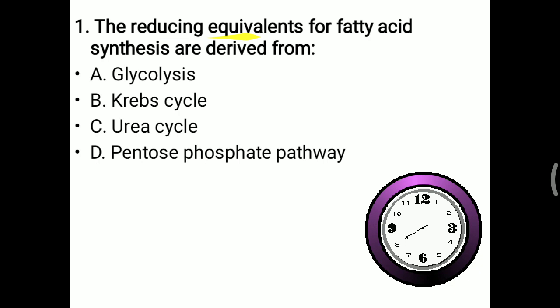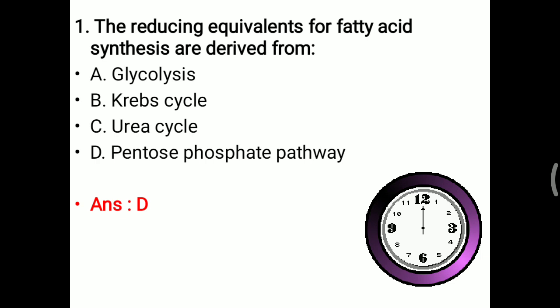Krebs cycle generates NADH or FADH2, mostly for ATP formation. Urea cycle is intended for urea formation. But the pentose phosphate pathway generates NADPH — another name is the HMP shunt pathway. So the right answer is D: pentose phosphate pathway, which helps make reducing equivalents for fatty acid synthesis.